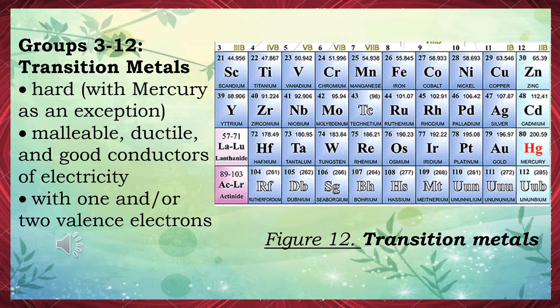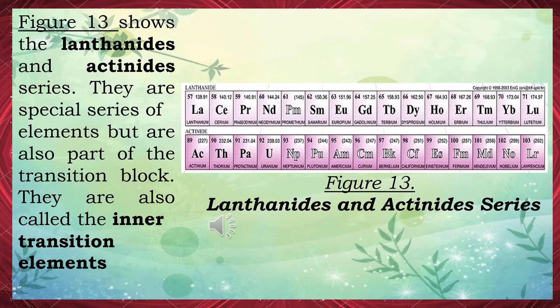Groups 3 to 12 — Transition metals: hard, with mercury as an exception, malleable, ductile, and good conductors of electricity, with one and/or two valence electrons. Figure 13 shows the lanthanides and actinides series. They are special series of elements but are also part of the transition block, also called the inner transition elements.